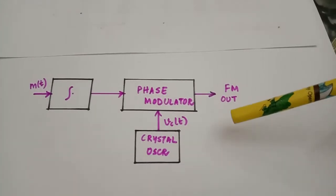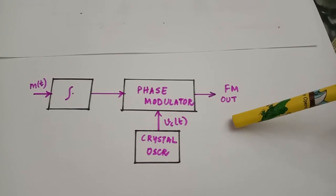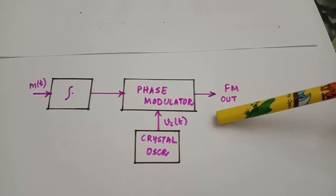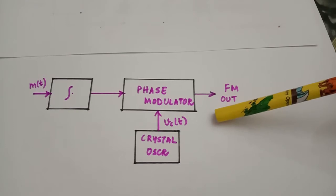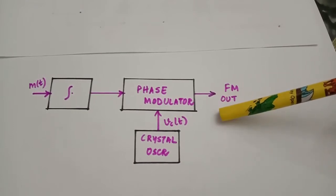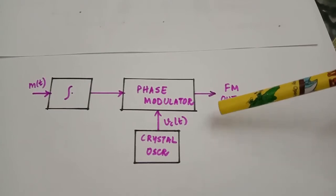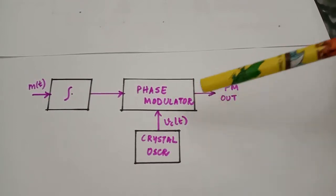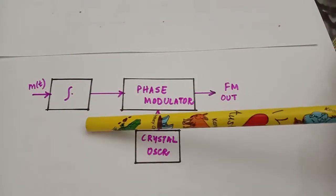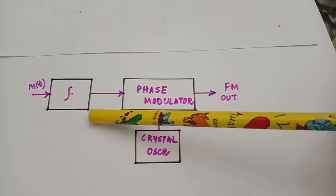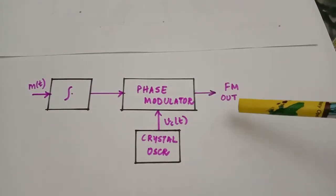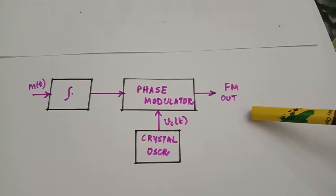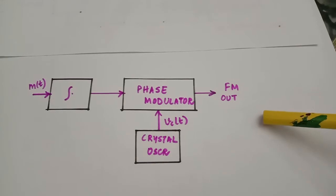The basic principle behind generating FM modulated wave by indirect method is that we use a phase modulator for generating FM modulated signals. In the previous session we derived the equivalence between FM and PM and we've seen that the output of a PM modulator contains FM signals. Rather than giving the input signals directly to the phase modulator, if we give a modulating signal through an integrator and then to the phase modulator, the output from the phase modulator is an FM output. This is the indirect technique used in the Armstrong method.